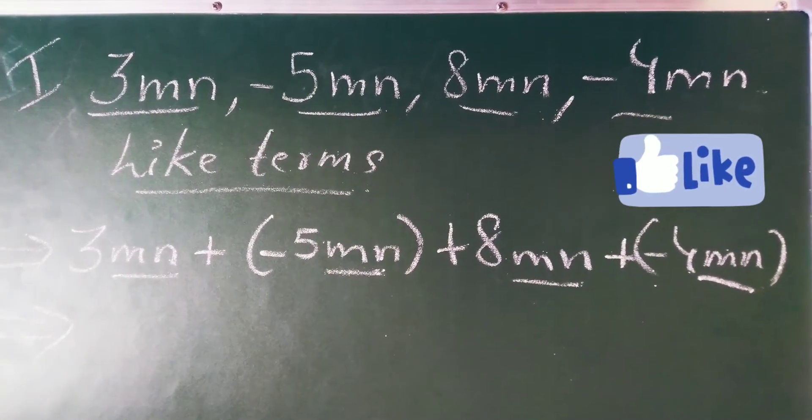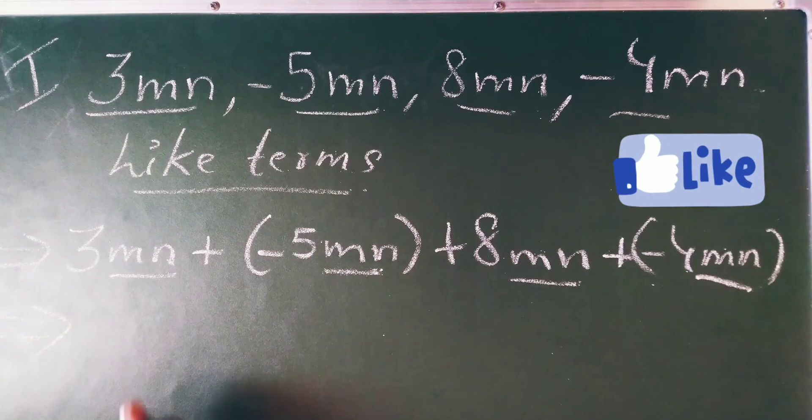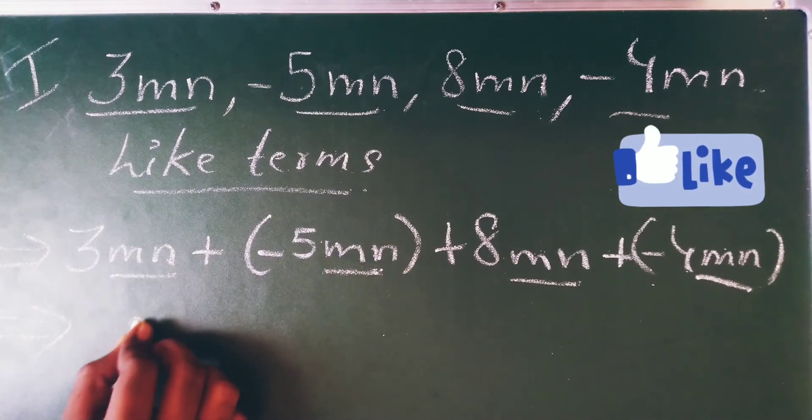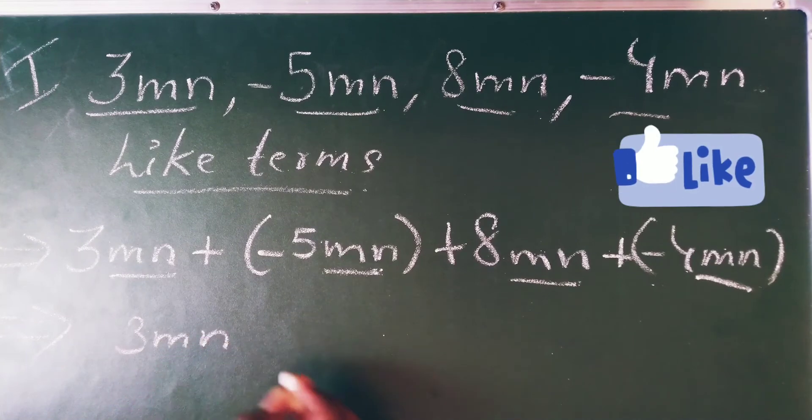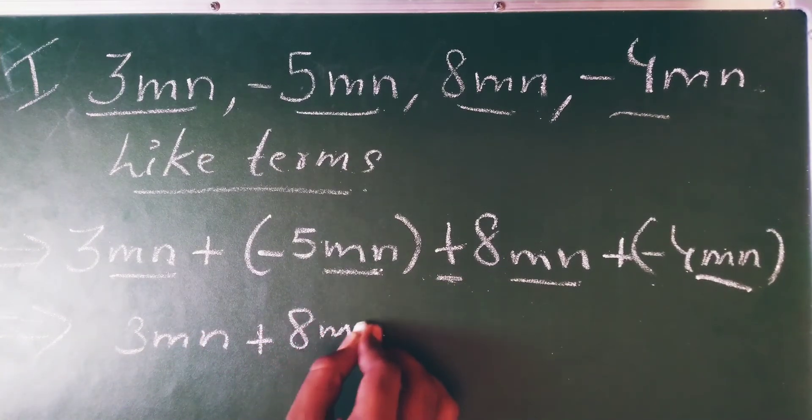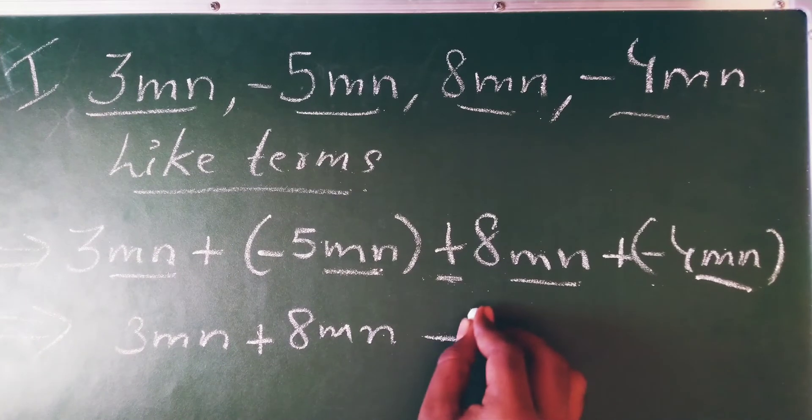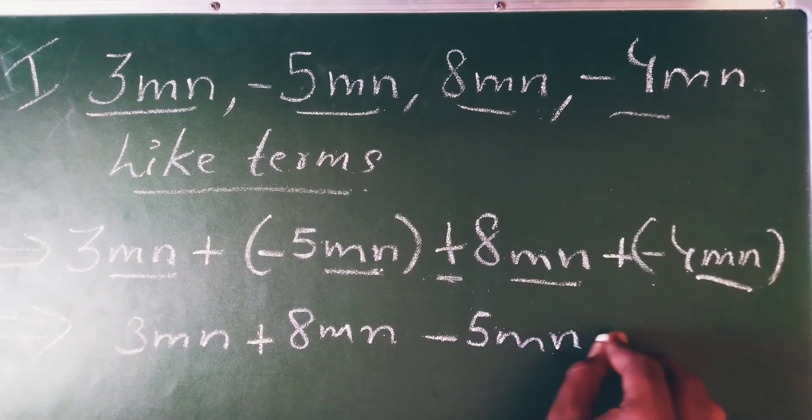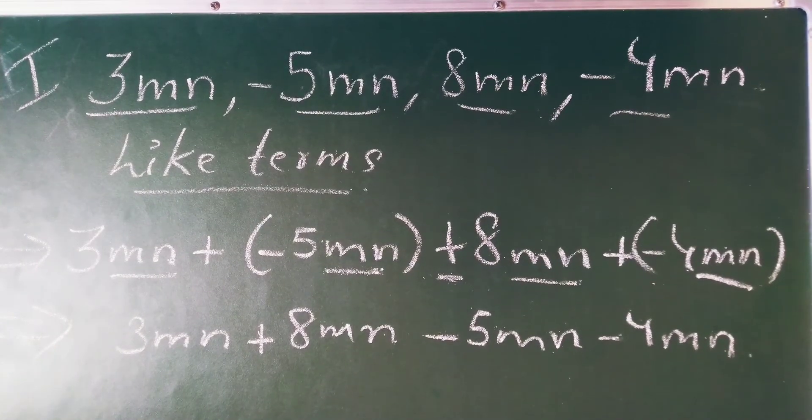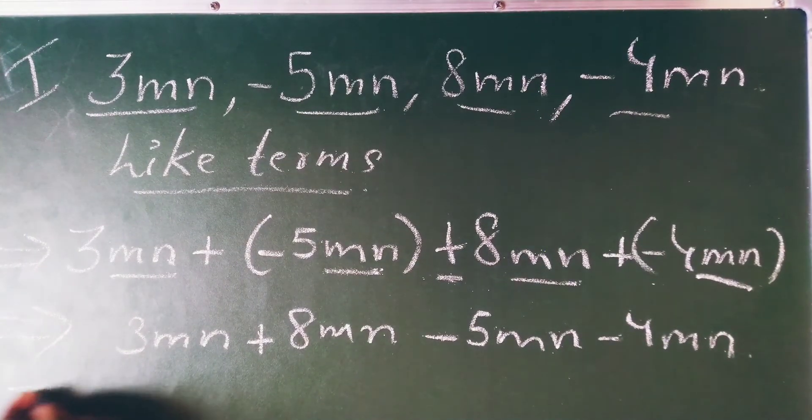Now what you have to do, you have to just add. Now I can add, just write it as 3mn plus 8mn, then minus 5mn is there, and again minus 4mn is there. Now I have to just add all this.